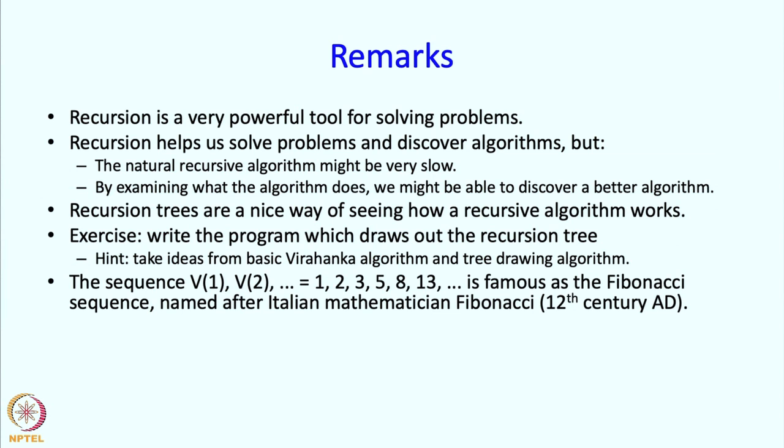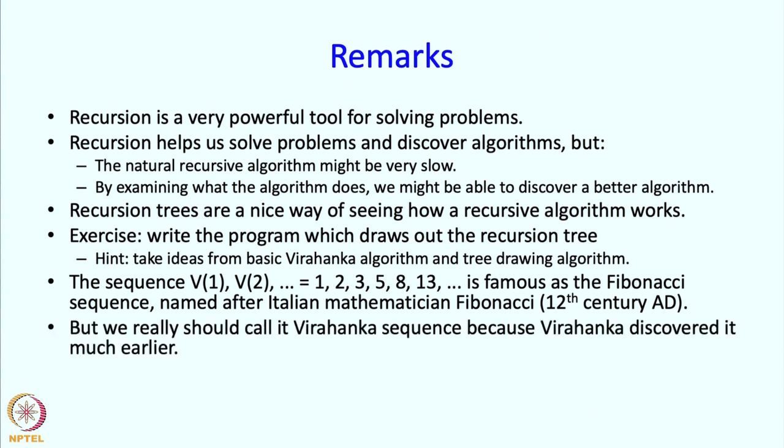Now this sequence, these Virahanka numbers V1, V2, V3 which are 1, 2, 3, 5, 8, 13, is actually a famous sequence and it is well known as the Fibonacci sequence, named after the Italian mathematician Fibonacci who lived in 12th century AD. But Virahanka discovered it much earlier, and we probably should be calling it the Virahanka sequence or call these numbers the Virahanka numbers, isn't it?